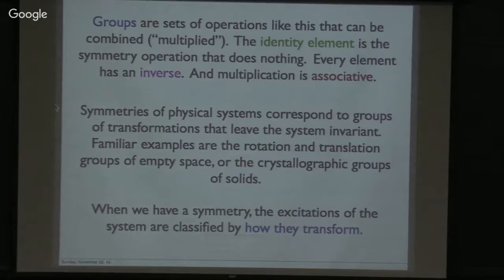So that abstract object, represented very concretely in a multiplication table with certain properties, is called a group. More formally, groups are sets of operations like this that can be combined or multiplied. The identity element that does nothing is always in the group. Every element in a group has an inverse. If you rotate one way, you could rotate back the other way. If you rotate to the right, you could rotate to the left. And multiplication is associated. Now, symmetries of physical systems, it turns out, correspond to groups. They're groups of transformations that weave the system invariant. And you've all seen this. This is quite basic for some of you. Some of you might not have used this language before. But familiar examples are the rotation groups of space. You know, we think space is symmetric under rotations if we weren't sitting in this room, but we're in vacuum in outer space. Translation groups, say in crystals. Crystallographic groups, right.